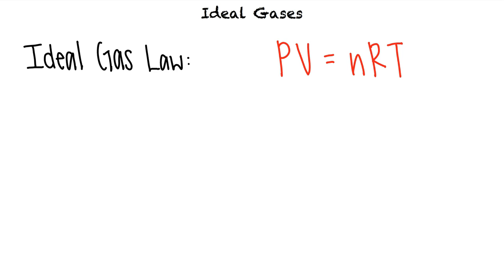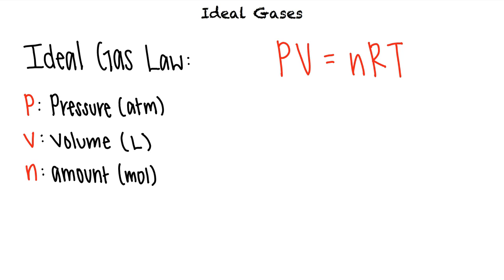What do all the variables represent? P is the pressure of the gas and is often measured in atmospheres. V is the volume of the gas and is measured in liters. N is the amount of gas, which is the number of moles. T is the absolute temperature of the gas and is measured in Kelvin. And R is the universal gas constant, which has the value 0.08206 liters times atmosphere per mole times Kelvin.